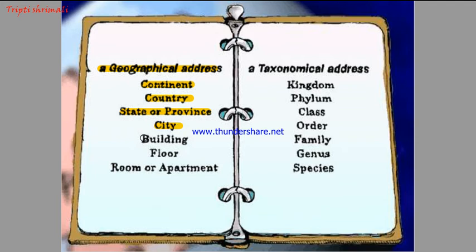In the same way, if we go to Jaipur, we need to know the building in which he lives. If it is a multi-storied building, then we need to know which floor he lives on, and then which apartment. So in the same way, we can locate, identify, and classify an organism.